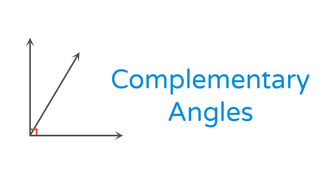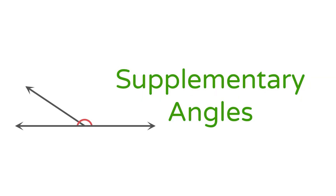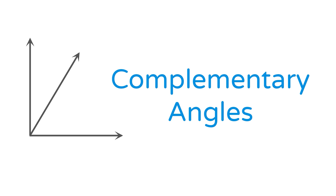There are two special types of angle pairs, so we give them special names. Complementary angles have measures that add to 90 degrees, and supplementary angles have measures that add to 180 degrees. Since 90 degrees is a right angle, that means adjacent complementary angles always form a right angle. You can split any right angle into two adjacent angles, and they will always be complementary.